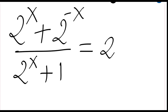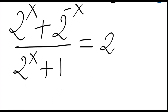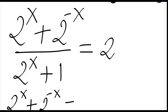We have this equation. We know that we can directly send this — multiply with this two. So let's just do it. We can still rewrite our equation as 2 to the power x plus 2 to the power minus x equal to two times 2 to the power x plus one.